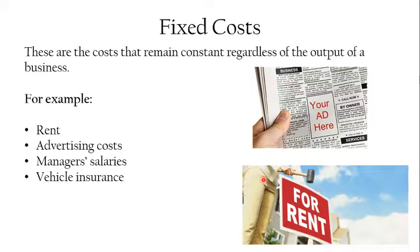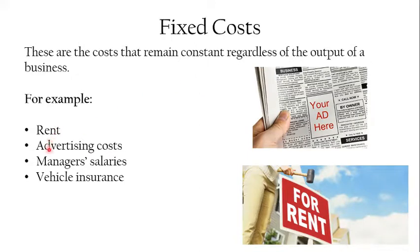Starting with fixed costs — it's really important when you're defining fixed and variable costs that you mention the term output. Fixed costs are costs that remain the same regardless of the output of a business. Let's take the example of a bakery. The fixed costs are going to be the same regardless of whether that bakery makes zero cakes or a million cakes. Examples include rent, advertising, managers' salaries, and vehicle insurance.